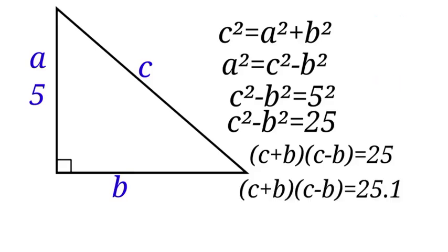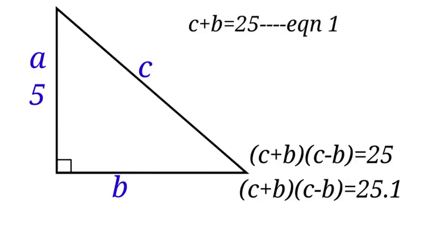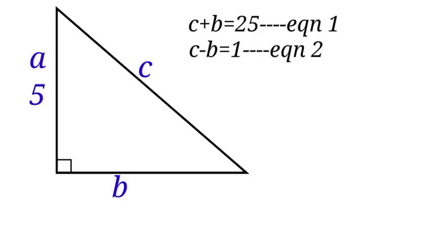We have (c + b)(c - b) = 25 × 1. Let us write them out into two equations: c + b = 25 (equation 1) and c - b = 1 (equation 2).